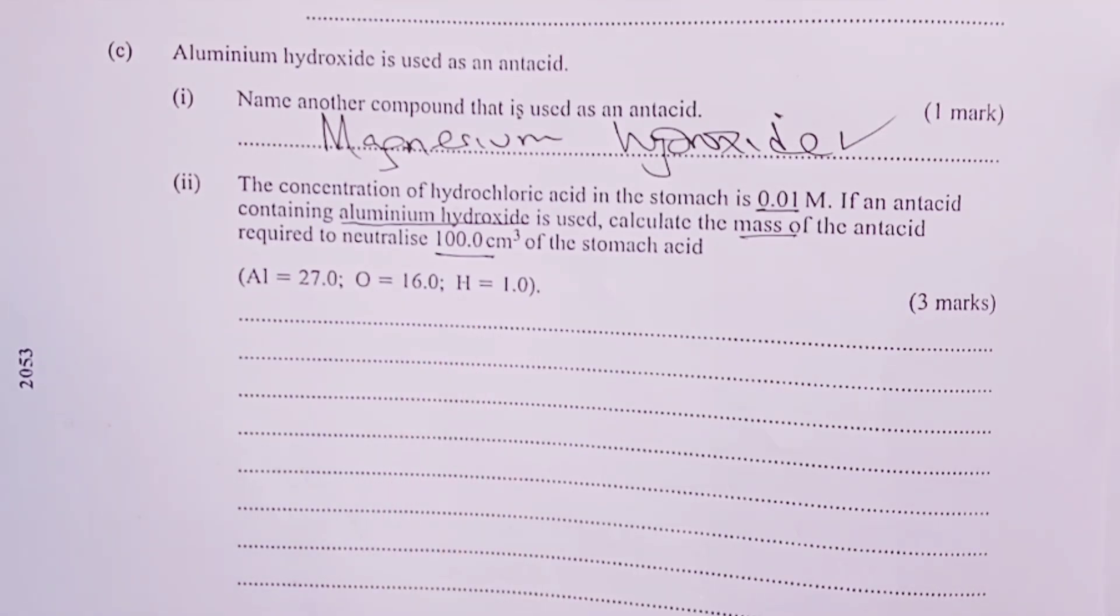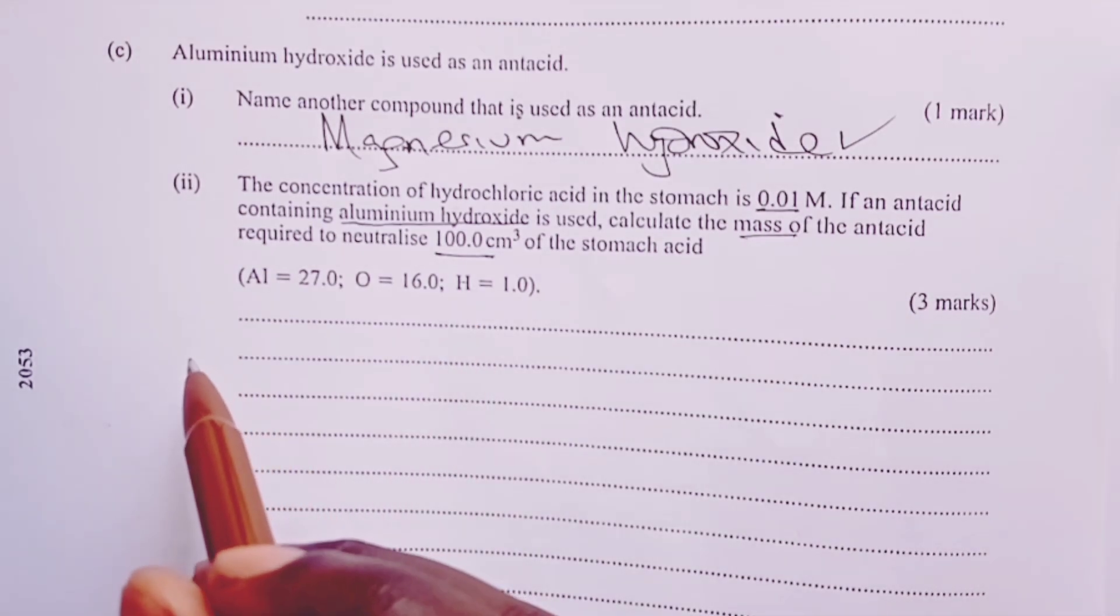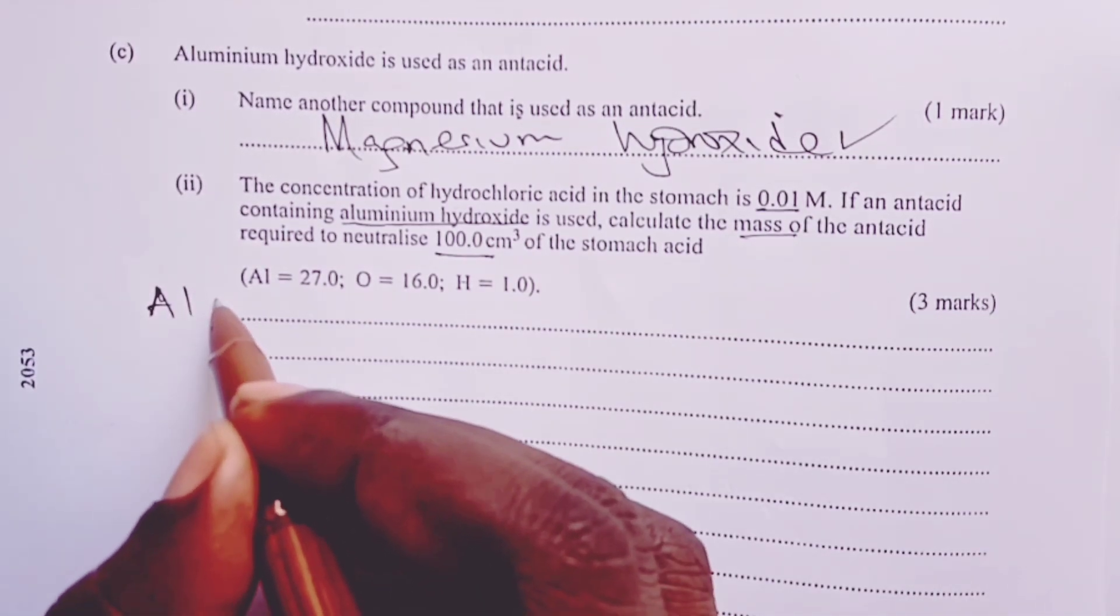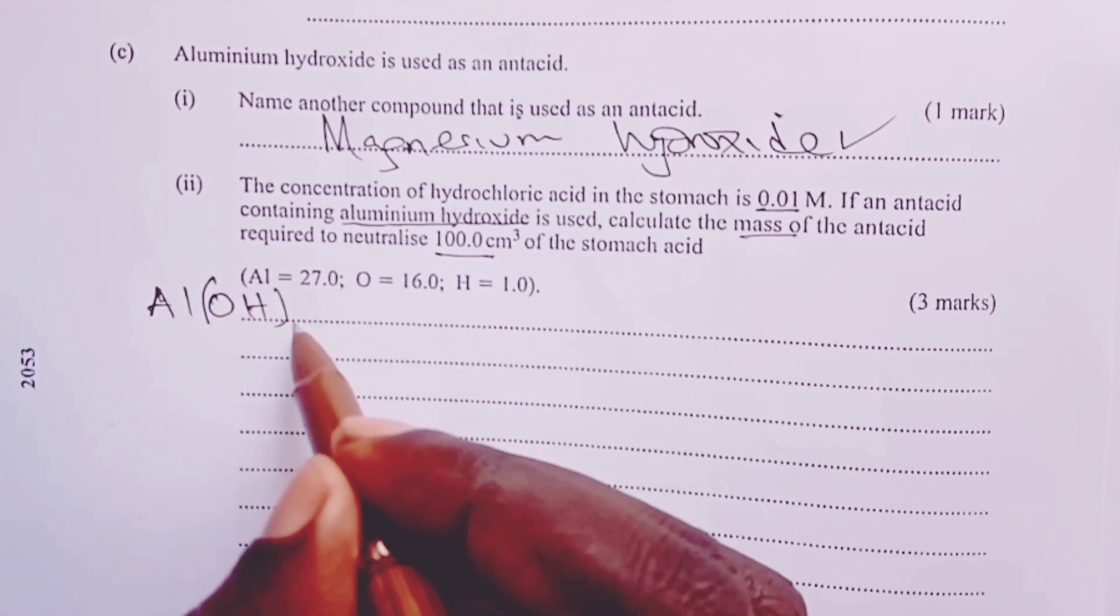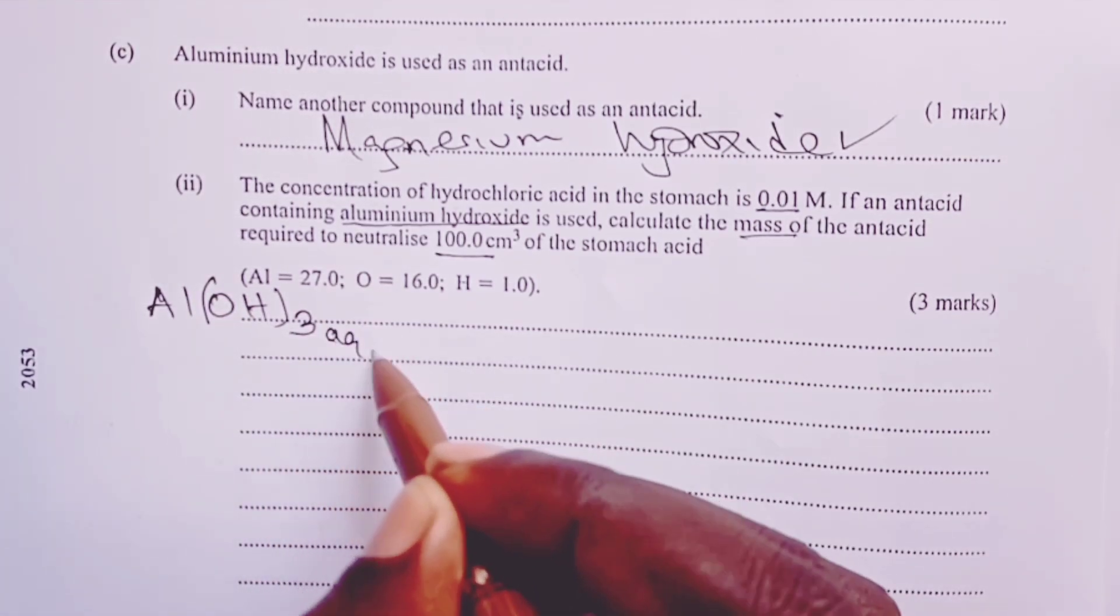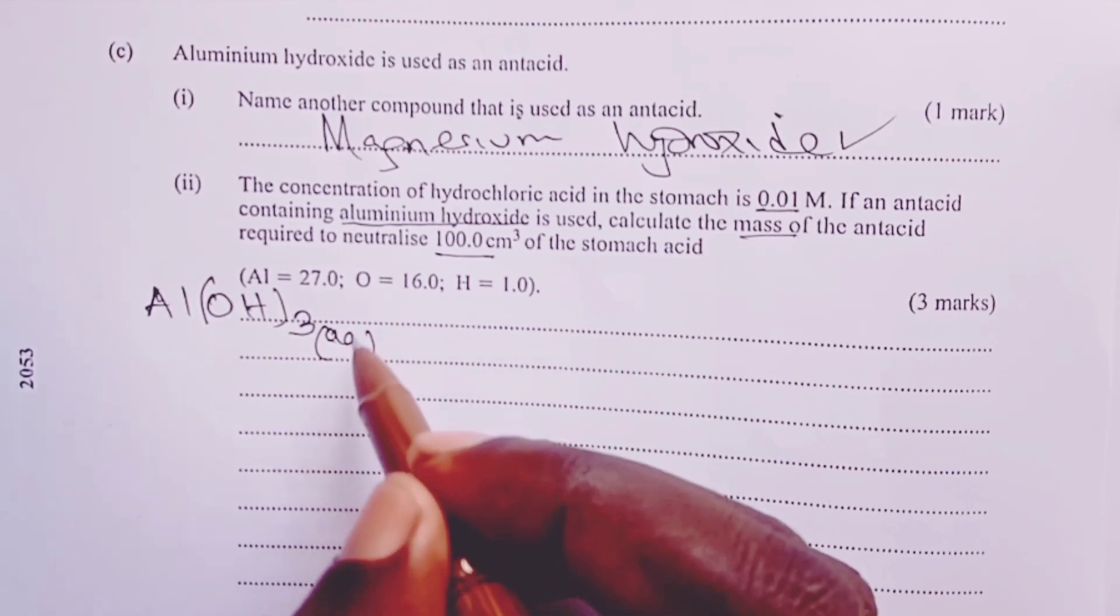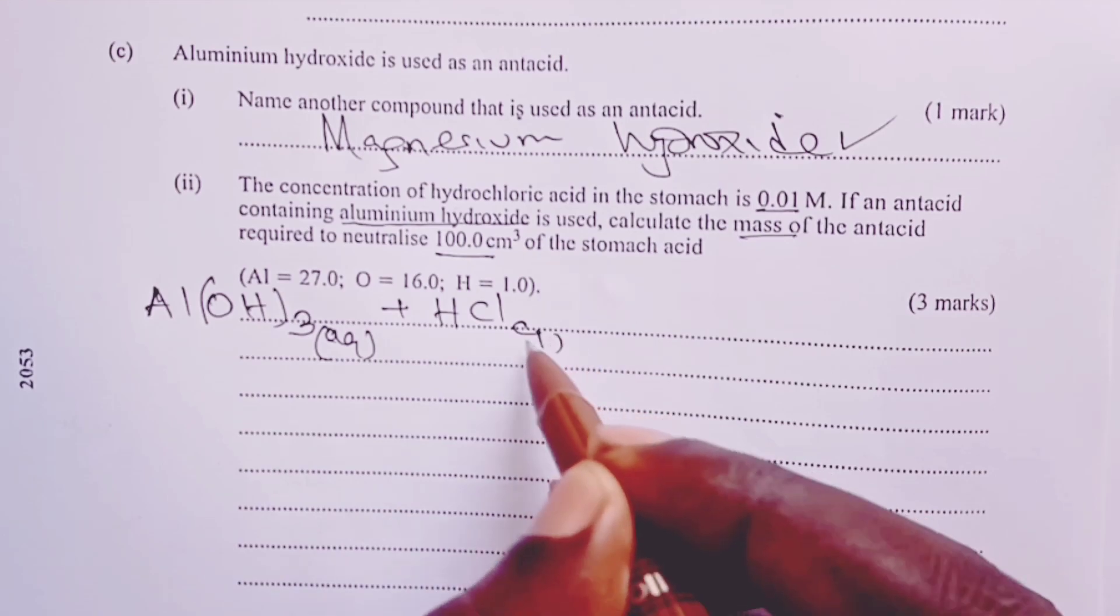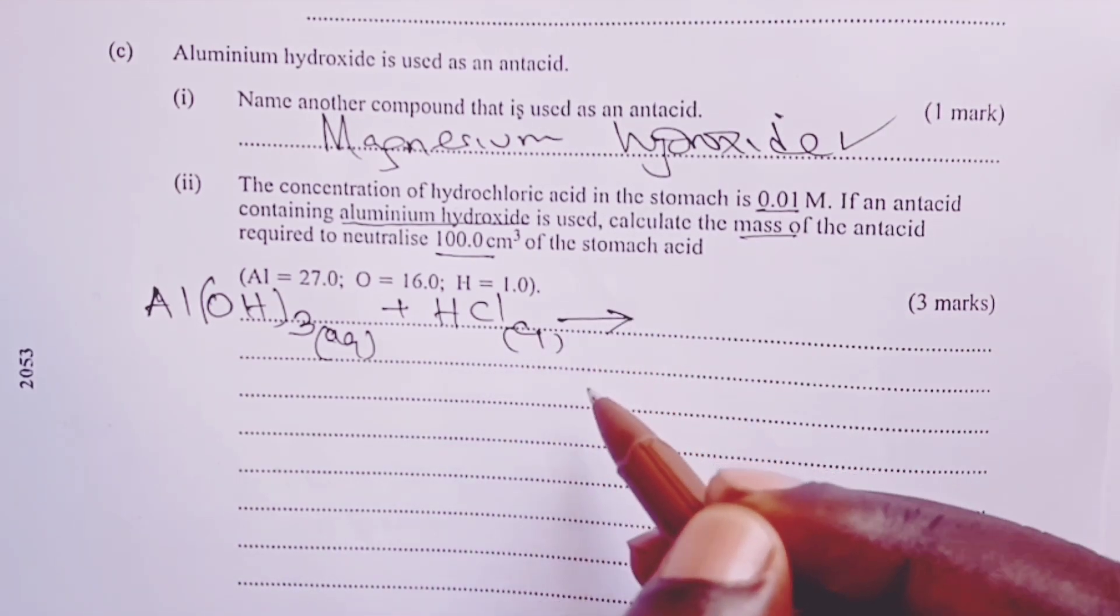The first thing that our student needed to have done here is to write a balanced equation between the two substances that were supposedly reacting in the stomach. That is aluminium hydroxide and our hydrochloric acid.